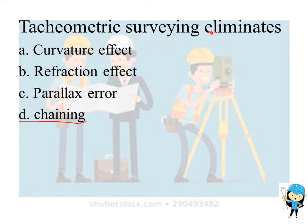Tachymetric surveying eliminates the chaining because in tachymetric surveying the distance is measured by the instrument itself. There is no need of any separate instrument to measure the distance.